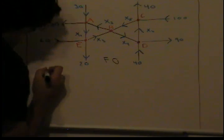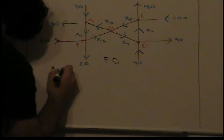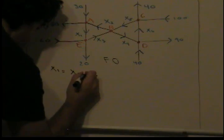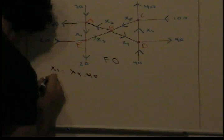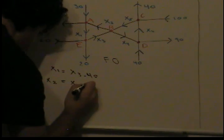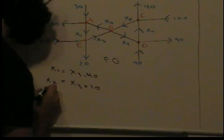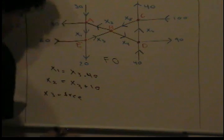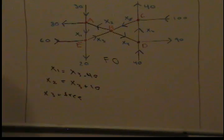Finally, you find out that x1 is equal to x3 minus 40. x2 is equal to x3 plus 10. x3 is a free variable, meaning we don't have a pivot there. It's a linearly independent column.